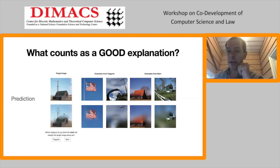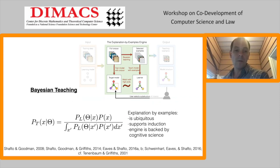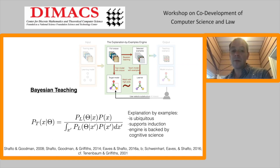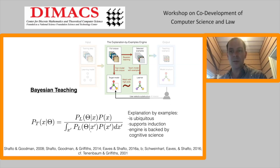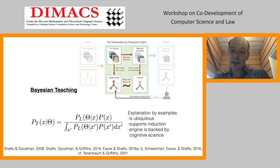In my lab we've been conducting experiments to understand this phenomenon. The approach we've been using is what we call Bayesian teaching, formalized here: the probability of teaching with a particular example, given a hypothesis represented by theta, is related to the probability of the learner inferring the parameter after seeing the example, a prior on the examples themselves, and a normalizing constant in the denominator. For those familiar with Bayesian inference, it looks a lot like Bayesian inference with the variables swapped. This model comes from the literature on human cognition and human learning.